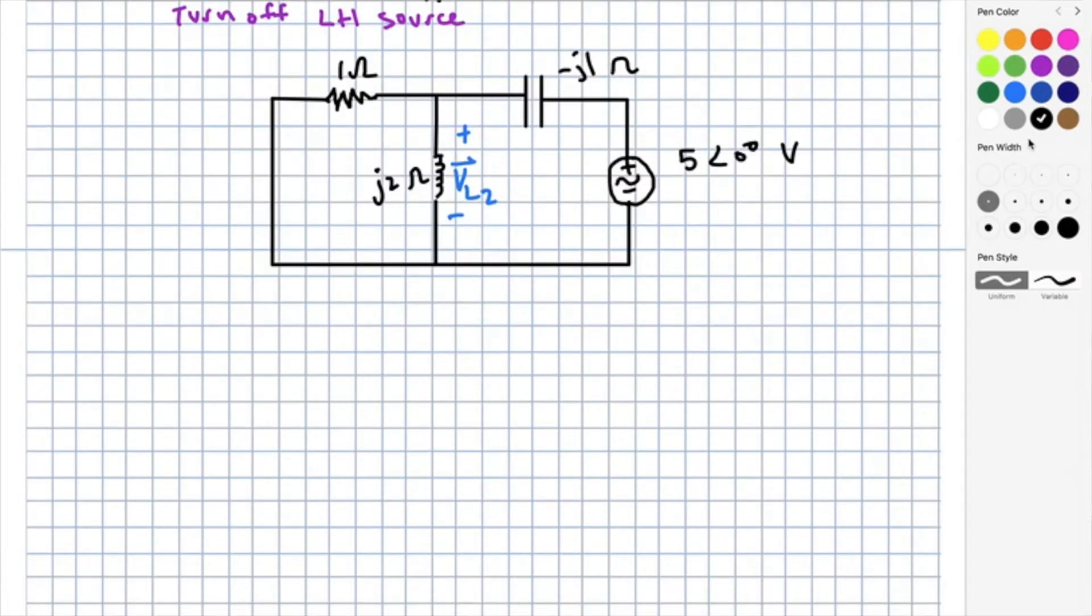Next, let's turn off the left-hand source. We can again use voltage division. We'll find that the voltage across the inductor due to the right-hand source is J 2 in parallel with negative J 1 over 1 plus J 2 in parallel with negative J 1 all multiplied by 5, which you will calculate out to be 4.47 angle 63.4 degrees volts.